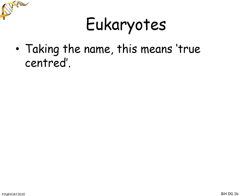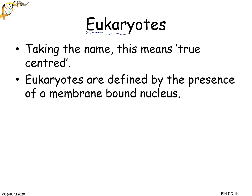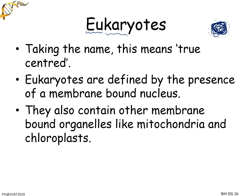The name 'eukaryote' means true center - 'eu' is Greek for true and 'karyo' means center, referring to a nucleus. A nucleus is not just DNA scribbled around - most essentially it is DNA enclosed by a nuclear membrane, which is made up of normal plasma membrane as you know from the fluid mosaic model. Eukaryotes also have other membrane-bound organelles - your mitochondria and your chloroplasts.